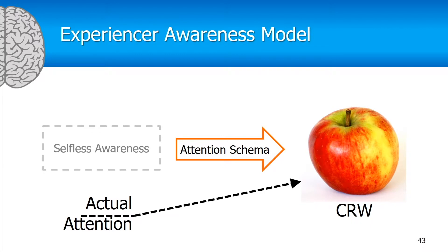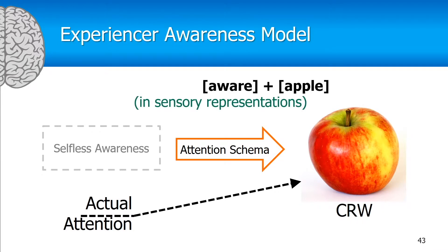I'm aware of the world without being aware of a self that's aware of the world. In feelings, that would be represented as 'aware apple' — not 'I'm aware of apple' or 'my body's aware of apple.' It's just awareness of apple is all that it is.